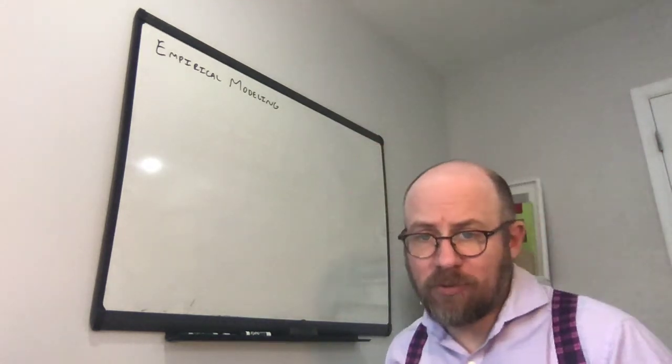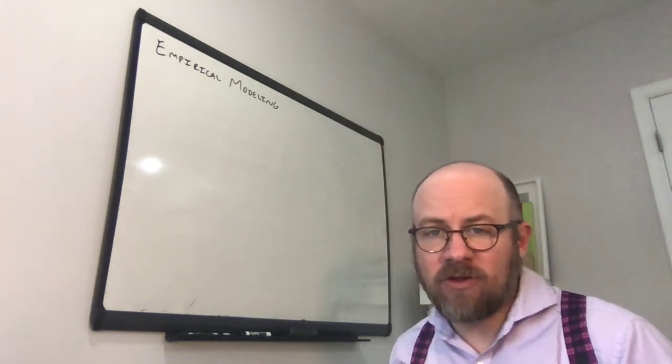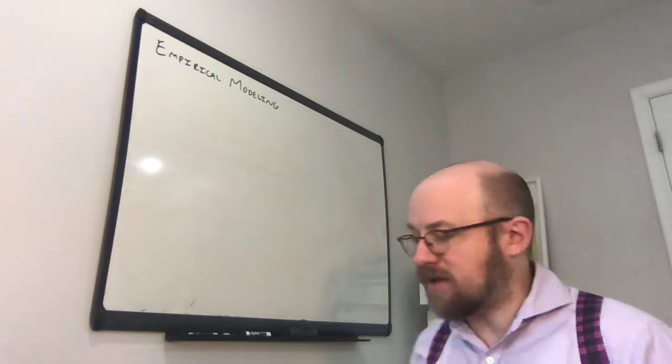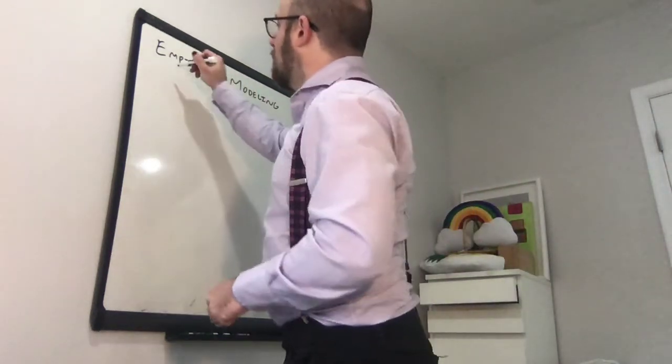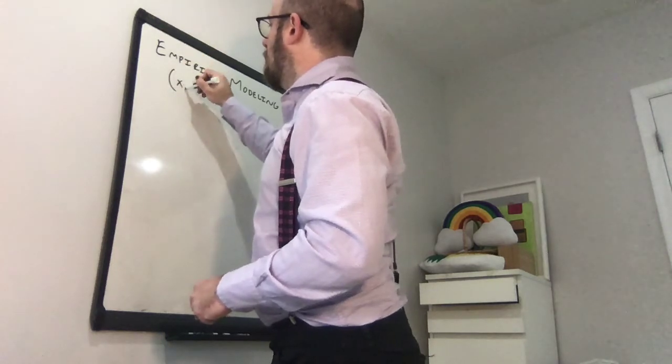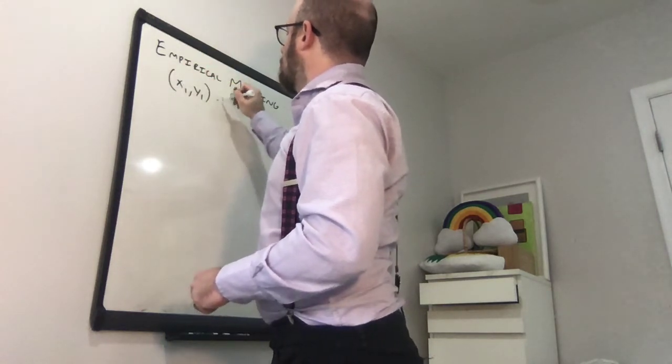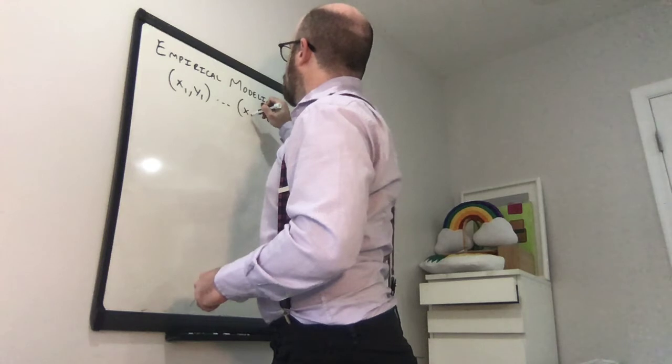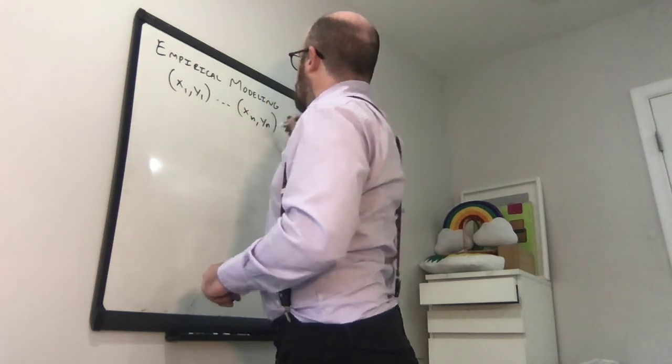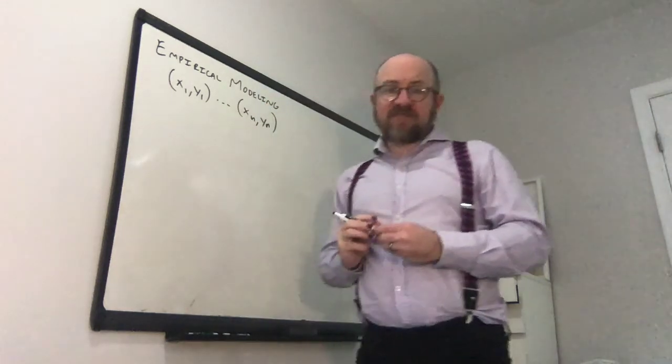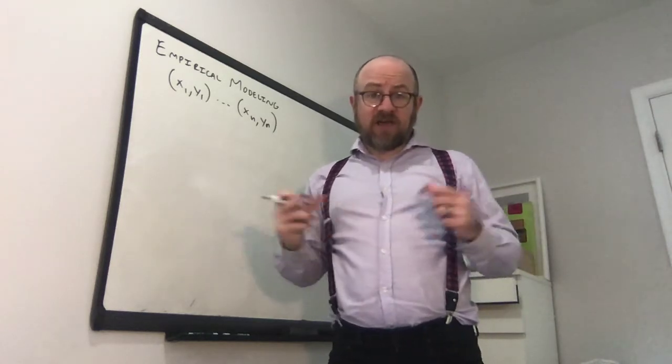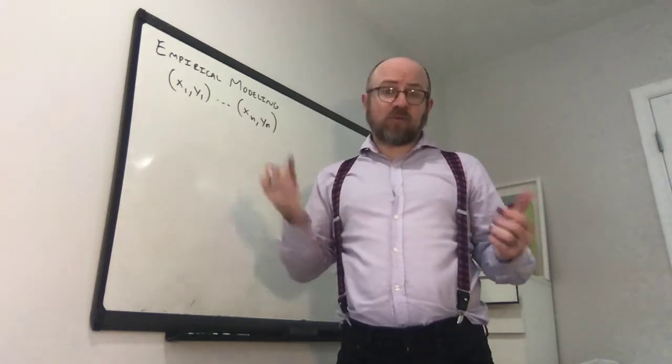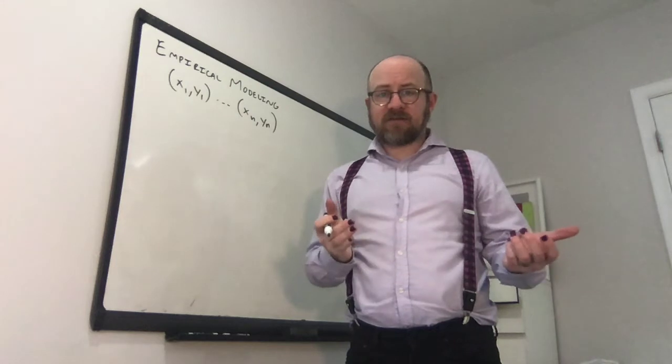So in empirical modeling, we generally have two data sets. So it might be, for example, time and another variable, or any two data sets. So we're going to have a set of points, (x1, y1) up to (xn, yn), where we've got these paired data values. And what we'd like to do is find a model that predicts y based on x.